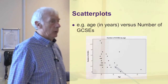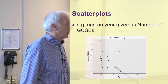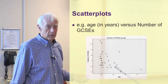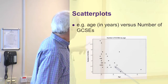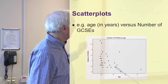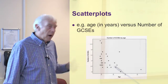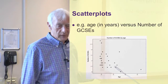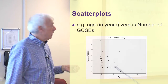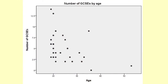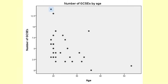Here's an example of what a scatter plot looks like. In this case it's age in years versus number of GCSEs — a dataset I've used many times before. The left-hand axis (the y-axis) shows the number of GCSEs, with the most GCSEs at the top — up to about 13 or 14 — and none at the bottom. One person there had no GCSEs.